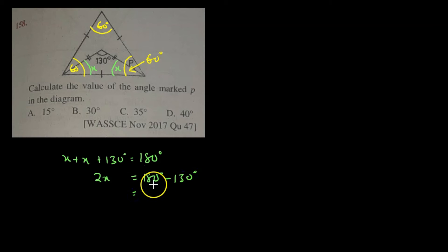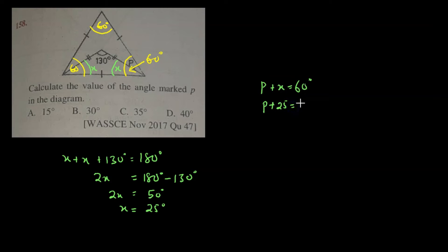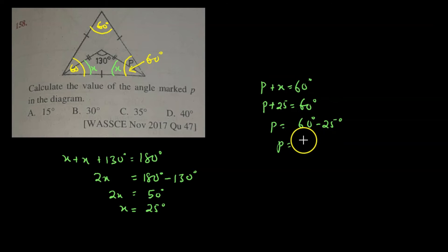The right-hand side gives us 50 degrees, so 2x equals 50 degrees, hence x equals 25 degrees. We've found that one of the interior angles of the isosceles triangle is 25 degrees. Therefore P plus x must equal 60 degrees, and since x is 25 degrees, P equals 60 minus 25 degrees, giving us P as 35 degrees. Therefore the answer for that question is C.